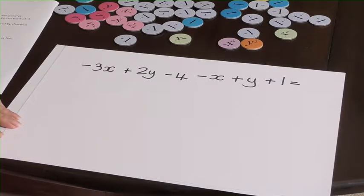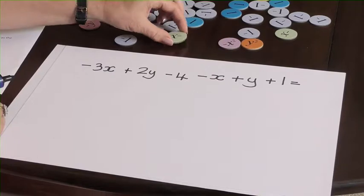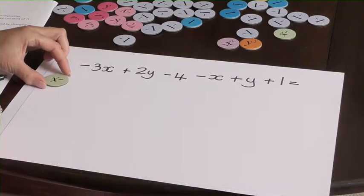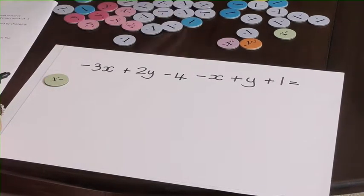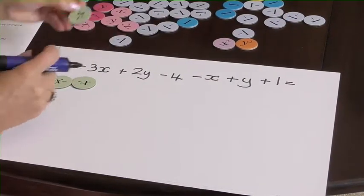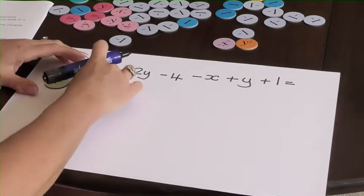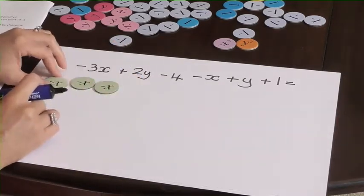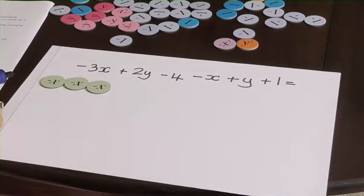But I think I'd like to model it first, so I'm going to use my algebra discs. We've got negative 3x - one, two, and one more - plus 2y.